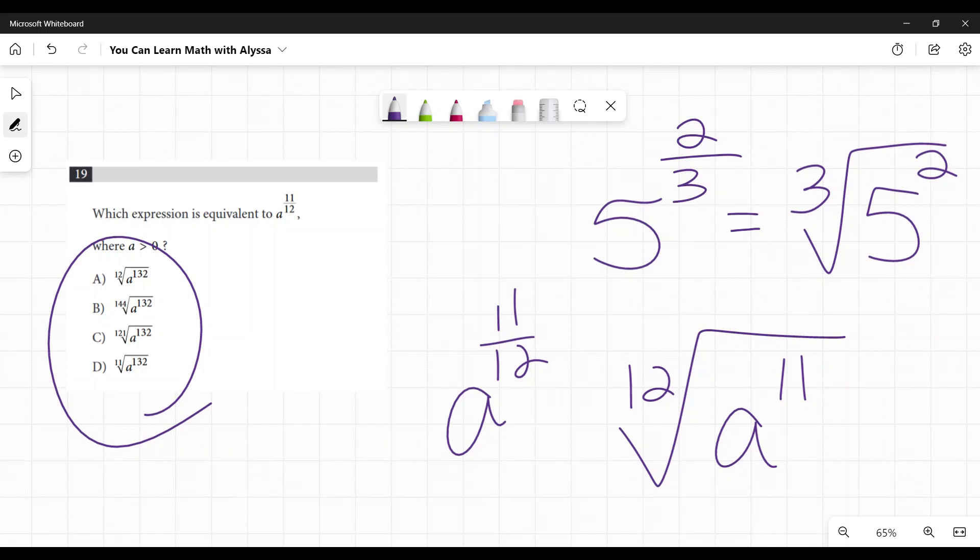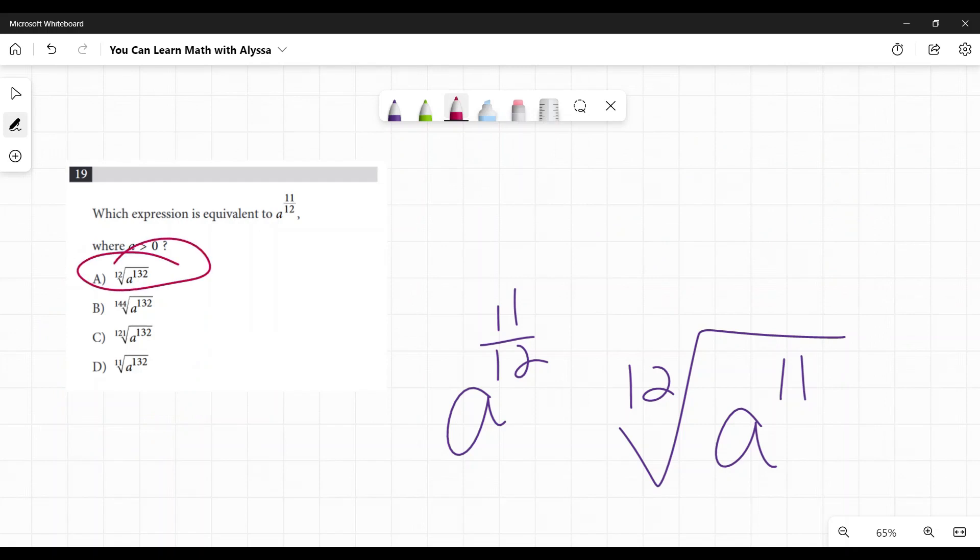Oh my goodness. What's going on? Something strange is happening. This is weird. What's happening? Well, let me look at my answers. I have the 12th root of a to the power of 132. 144th root of a to the power of 132. 121st root of a to the power of 132. And 11th root of a to the power of 132.